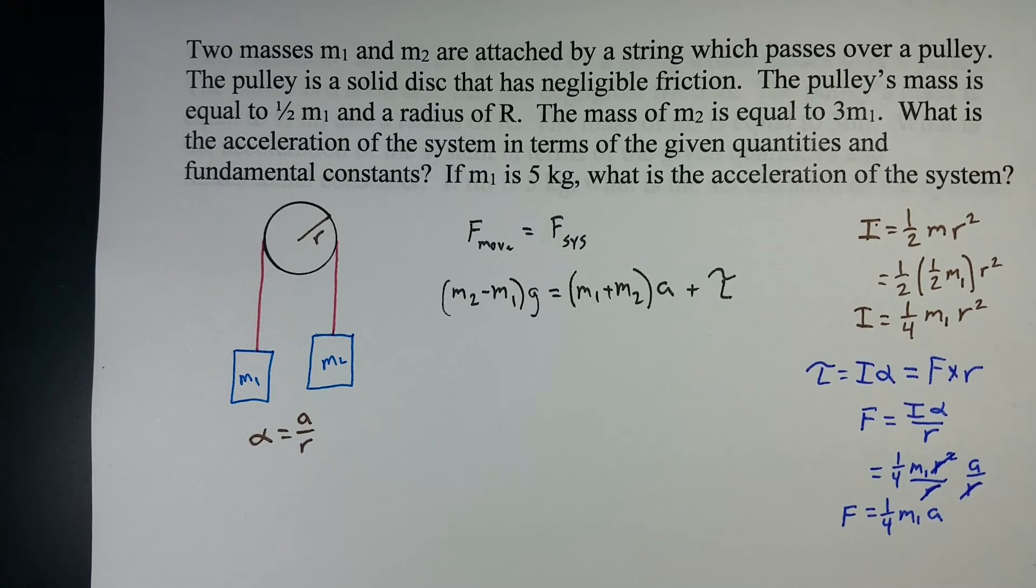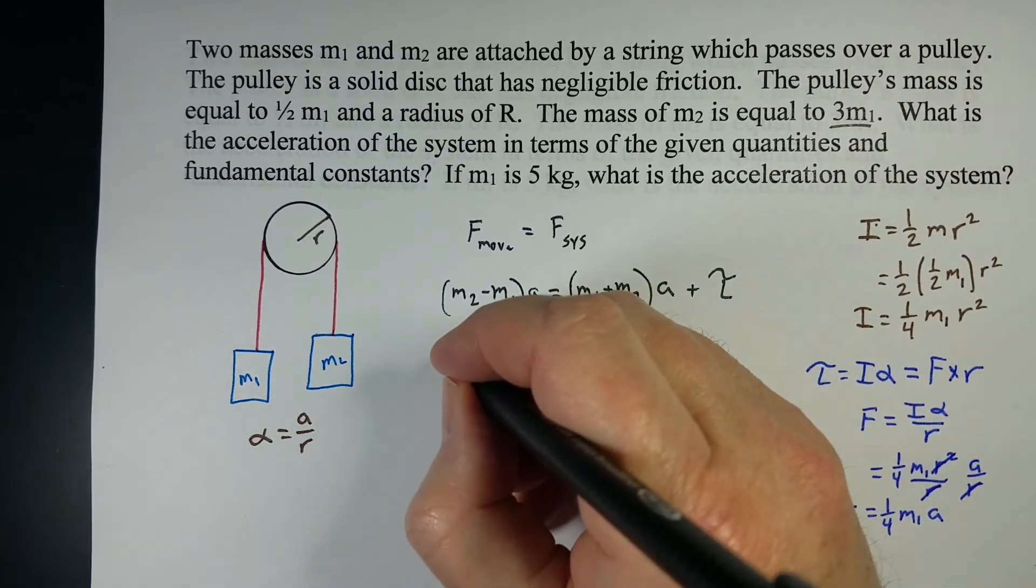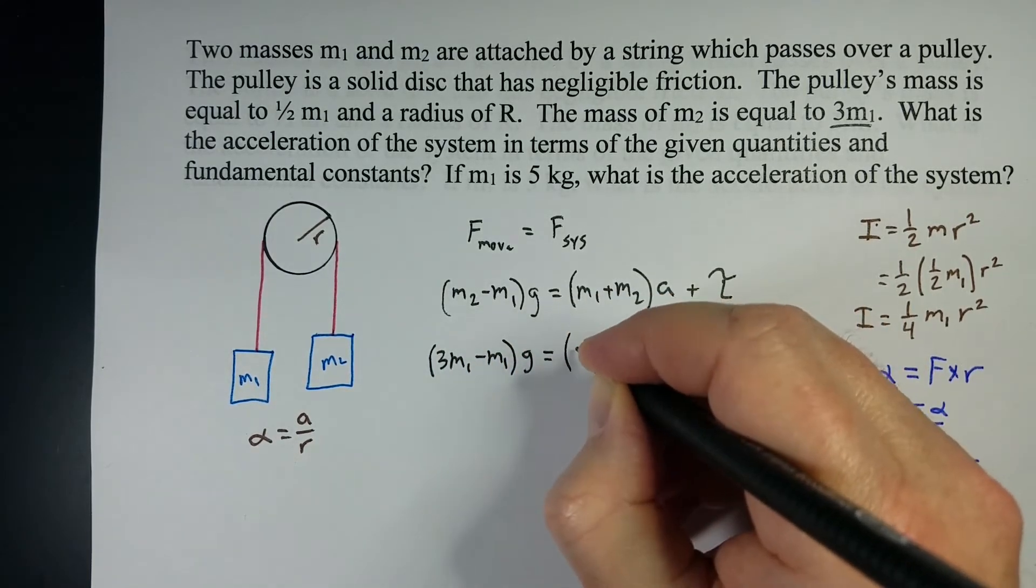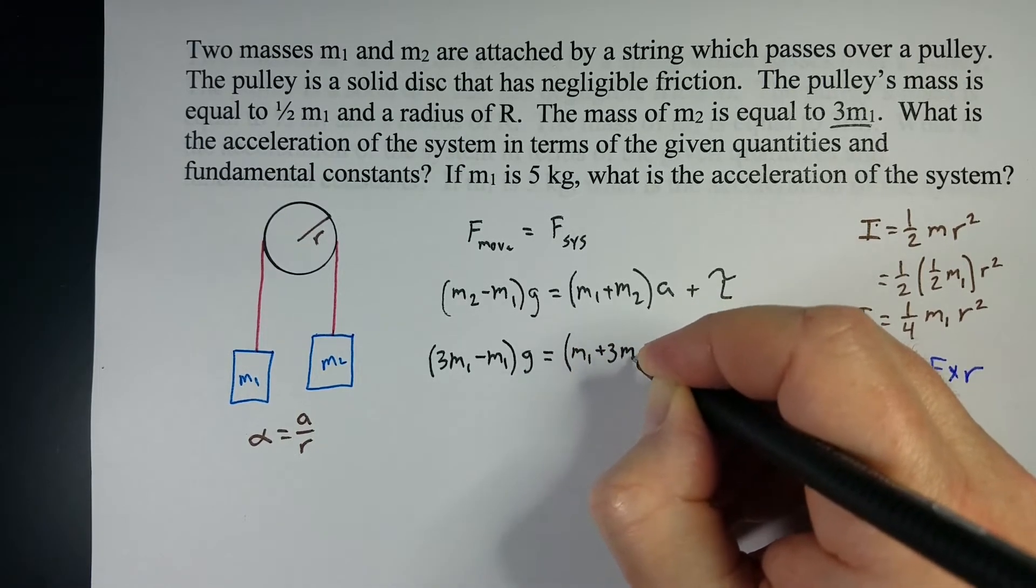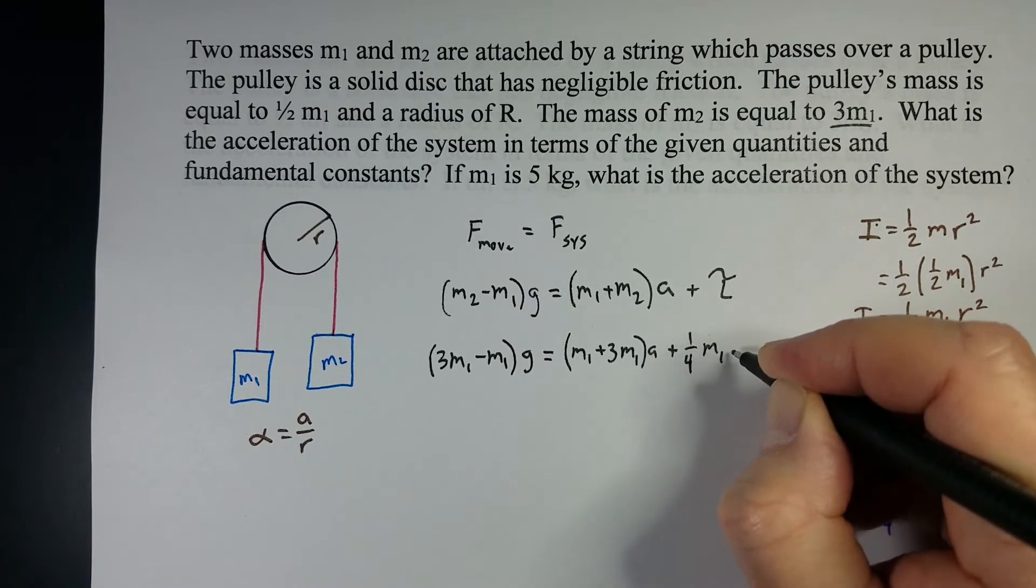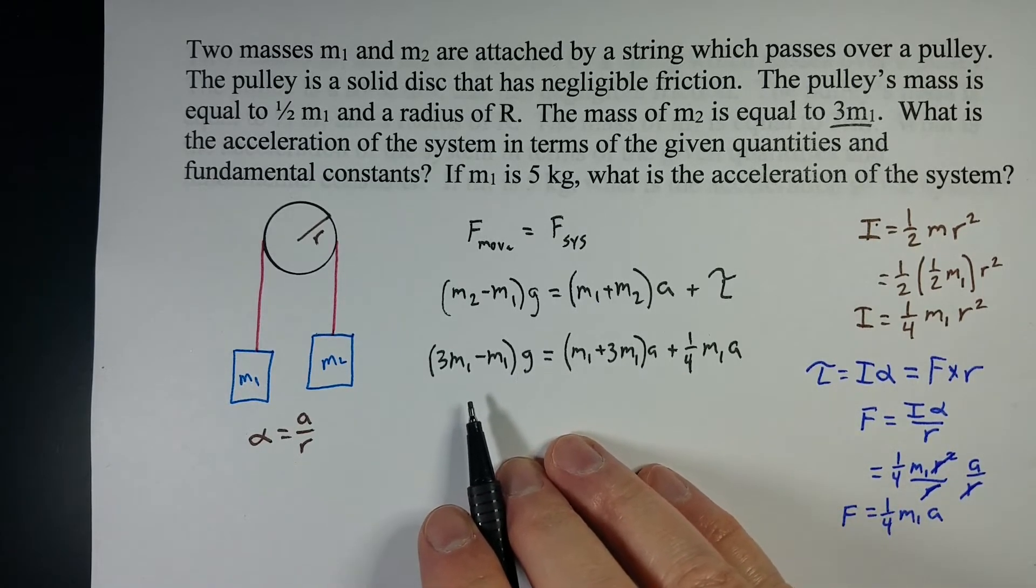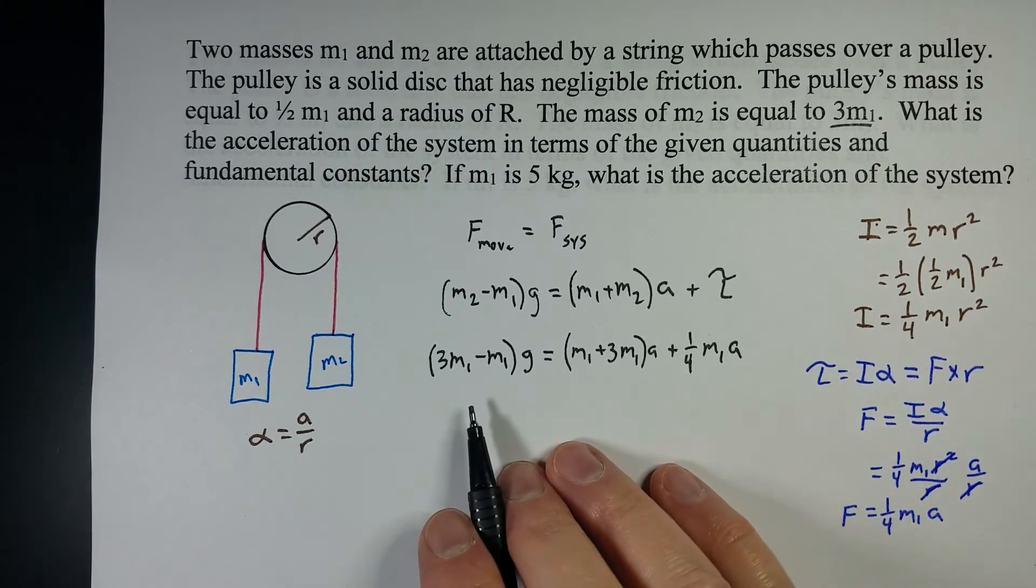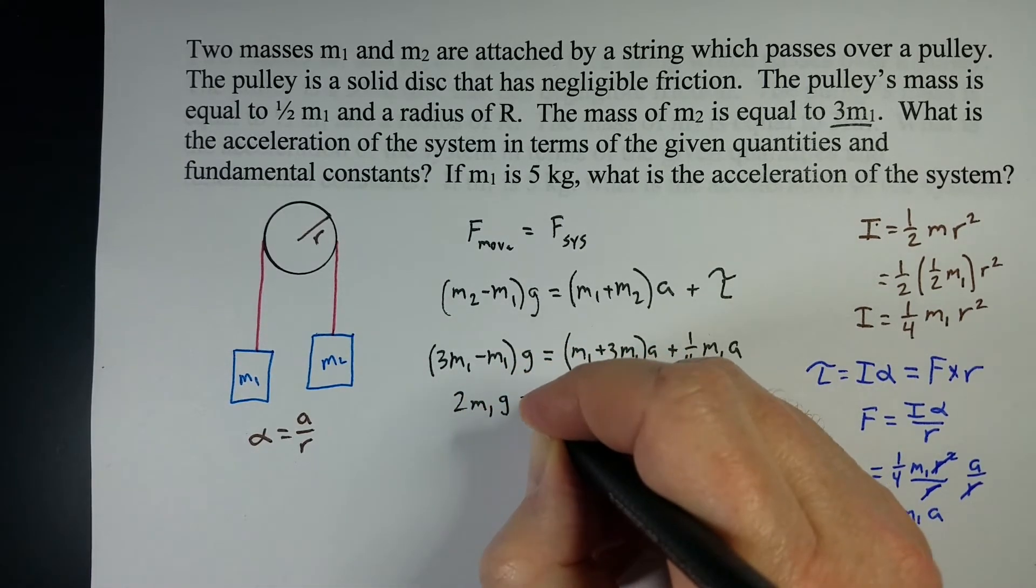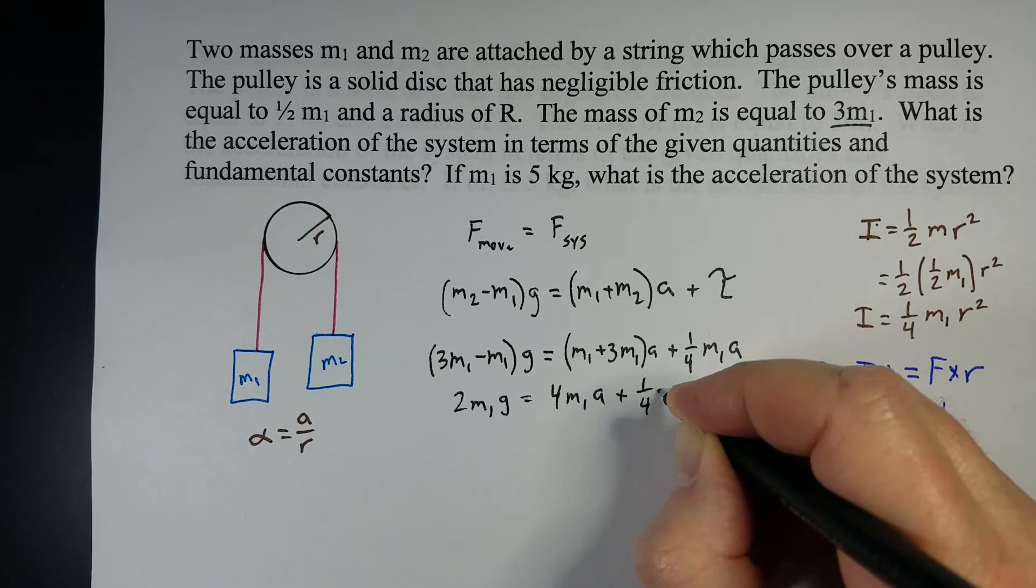I'm going to go ahead and put everything in terms of M1. So M2 is actually 3M1, so we have 3M1 minus M1 times G equals M1 plus 3M1 times A plus one-fourth M1 A. We've got everything in terms of A, which is good.